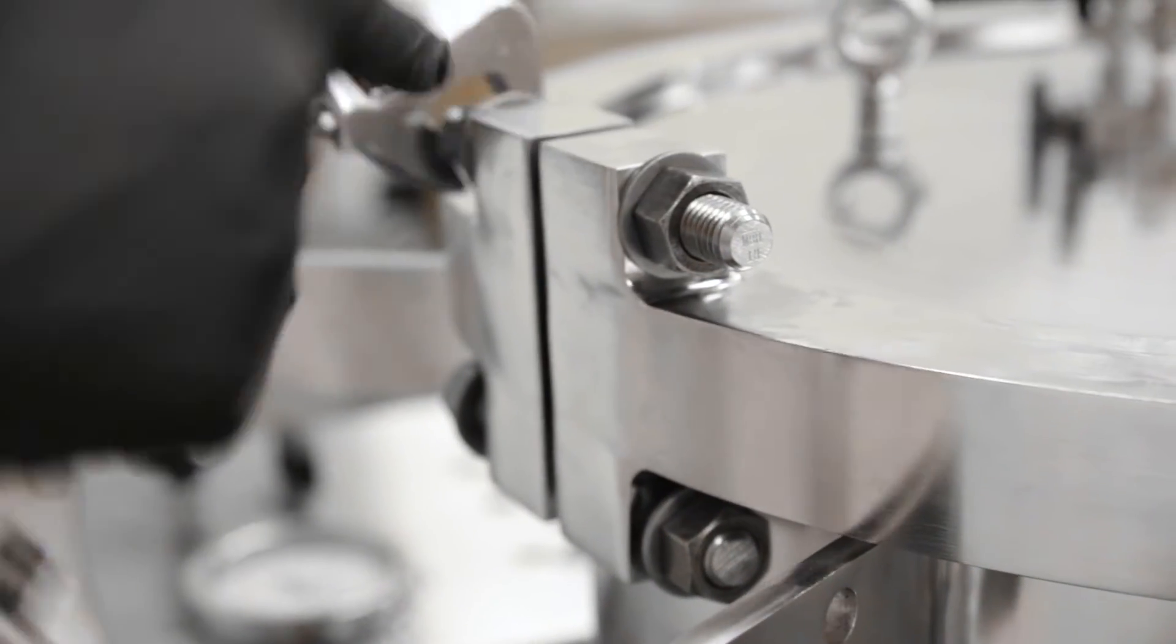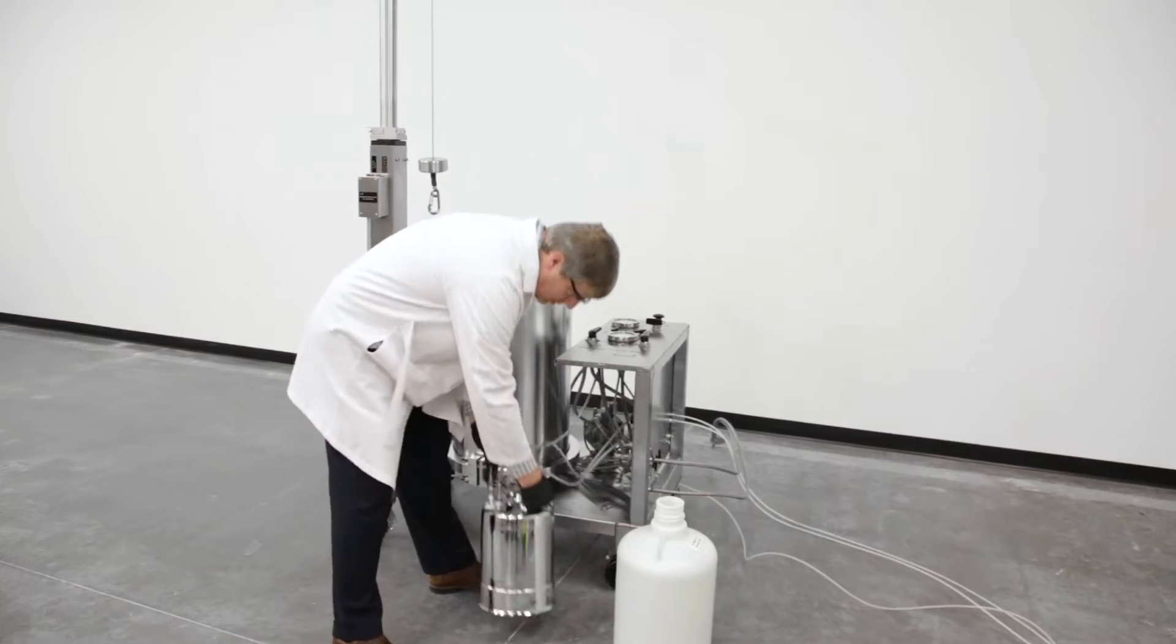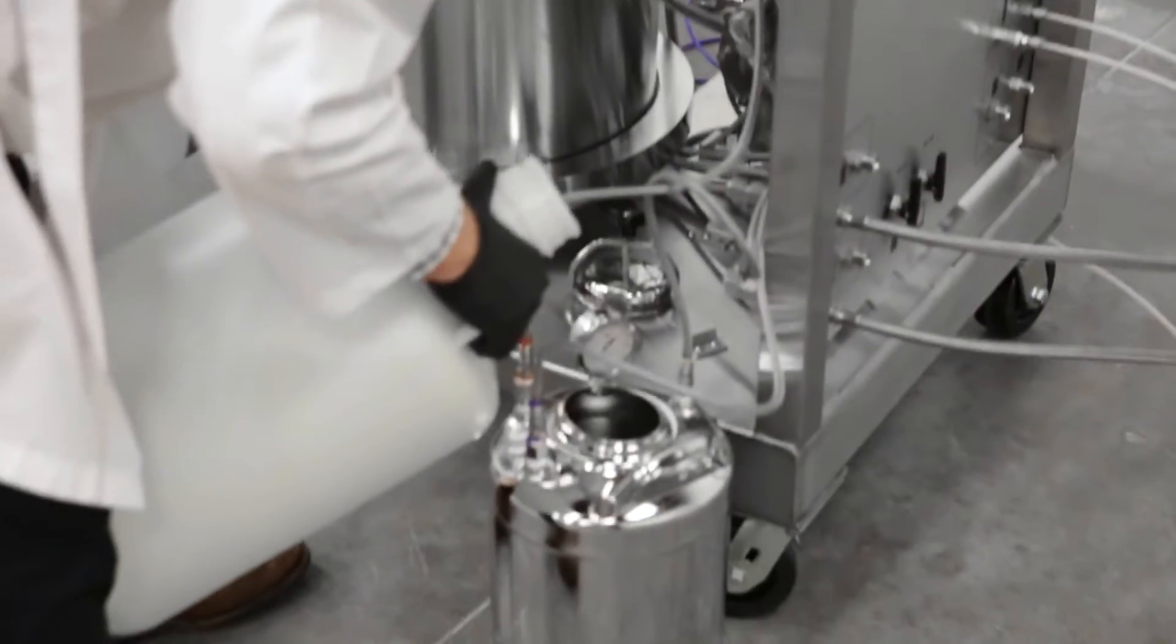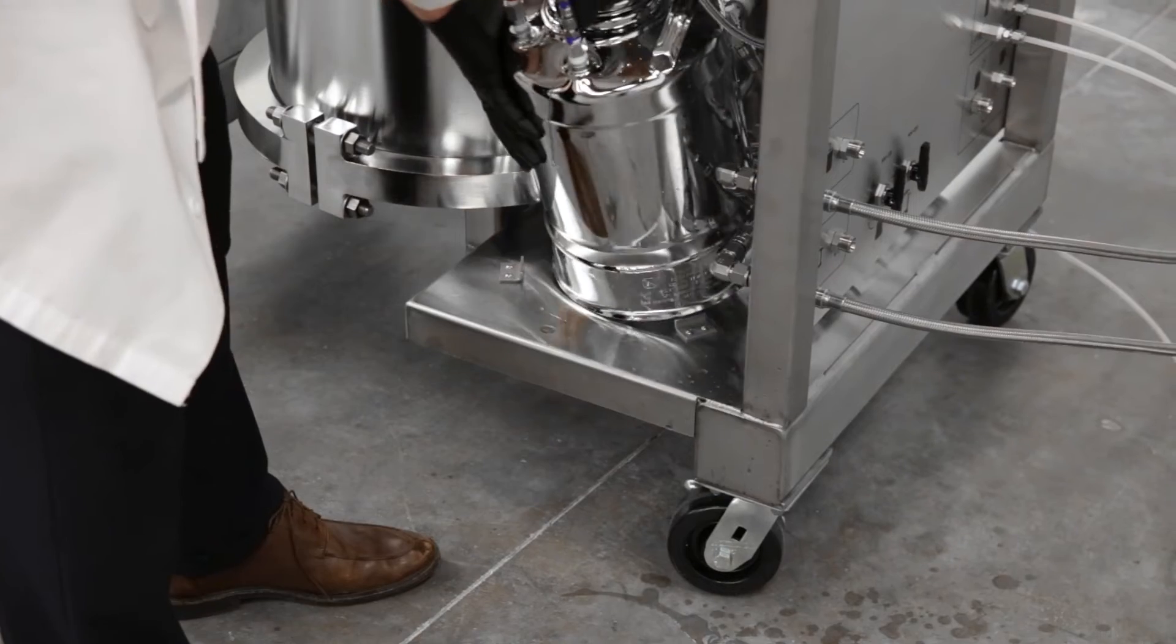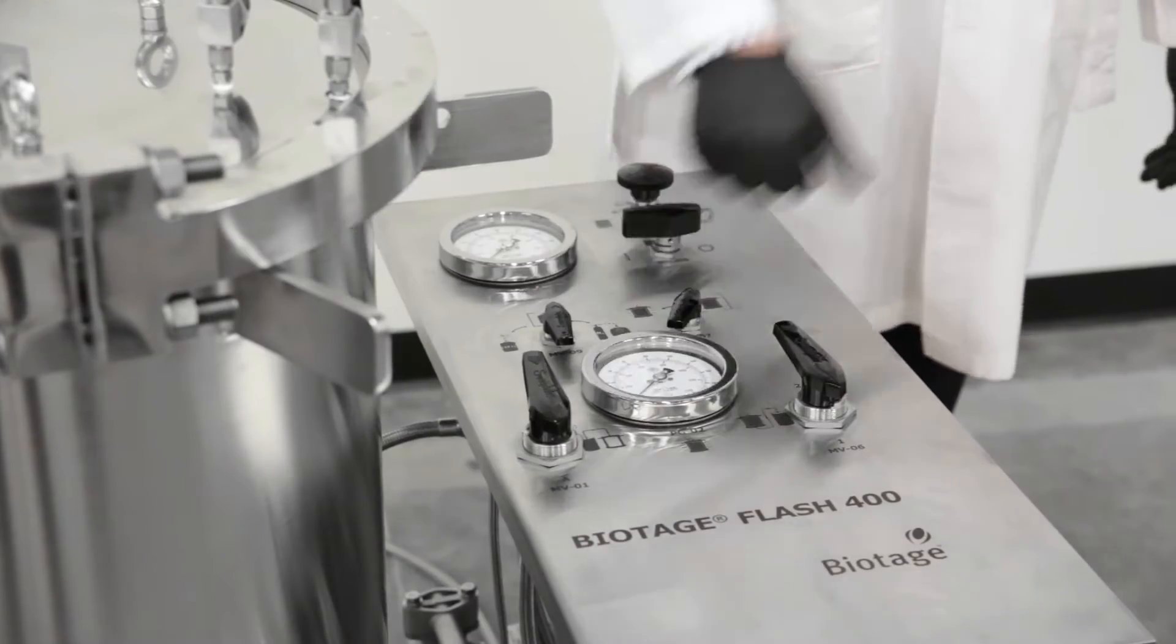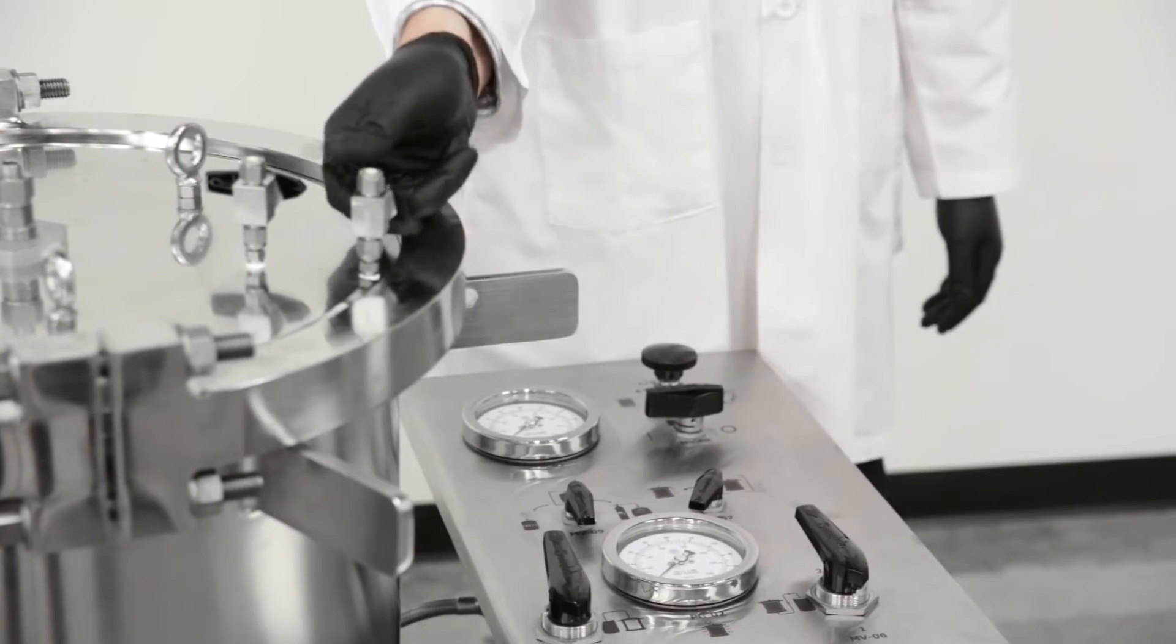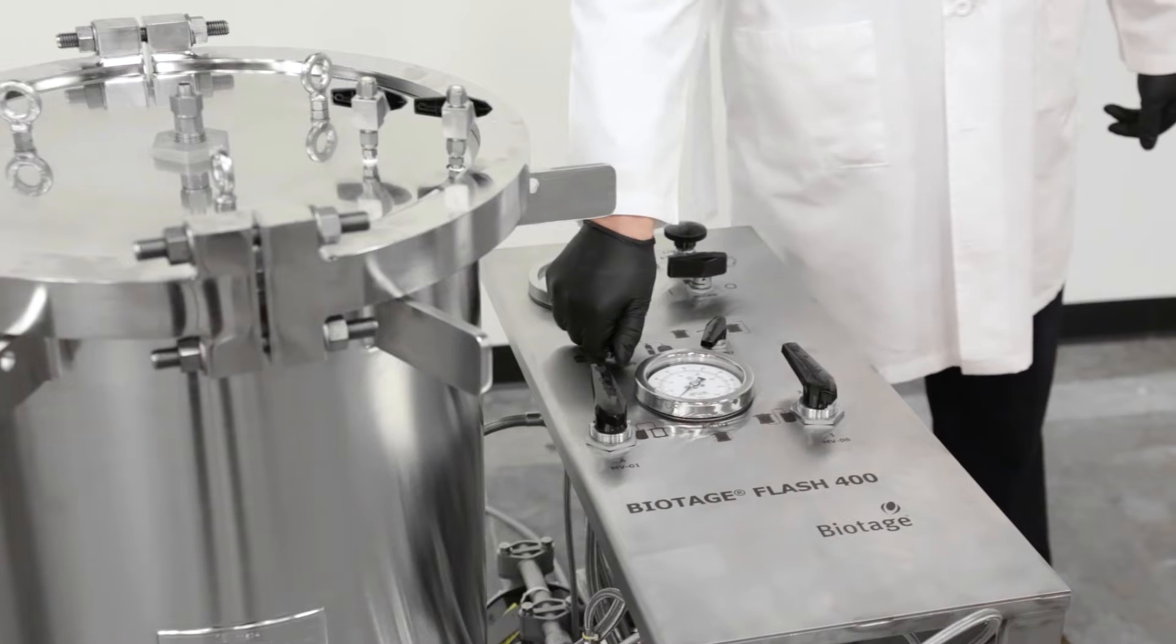With the cartridge securely in place, the radial compression can be prepared by filling the reservoir with fluid. The compression module is then sealed off with the valves located on the panels and head.